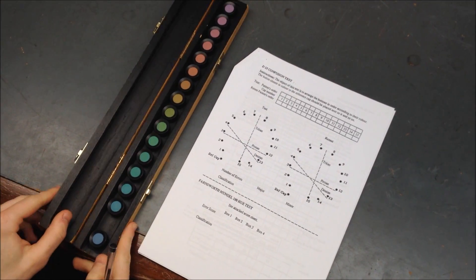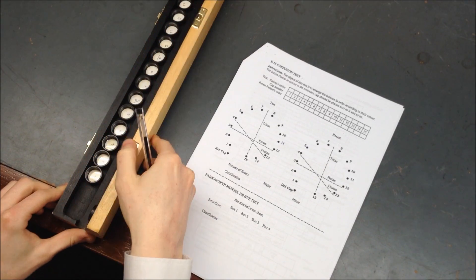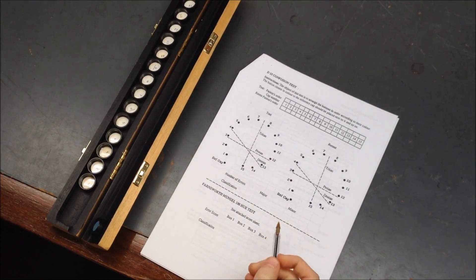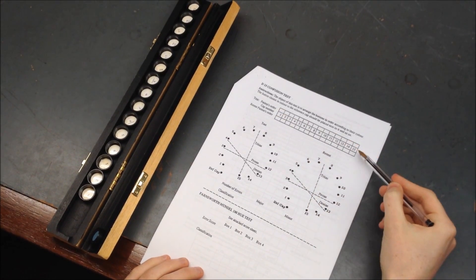So here we have Tom's results here. In order to assess these we'll just flip them over. Now this is the sheet we use to classify each patient. So as you can see here it says CAT numbers and it goes from 1 to 15.